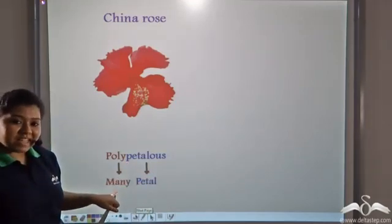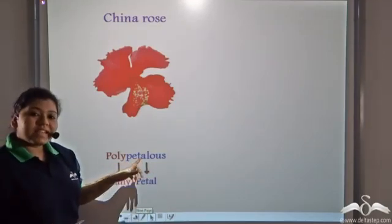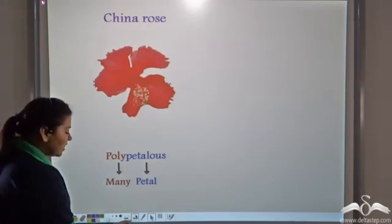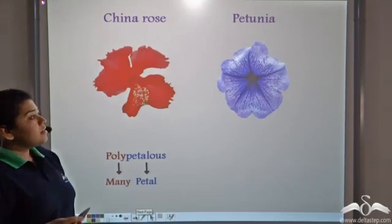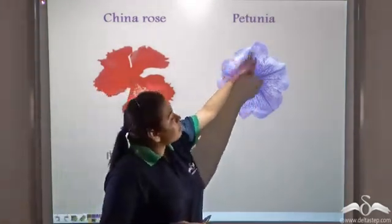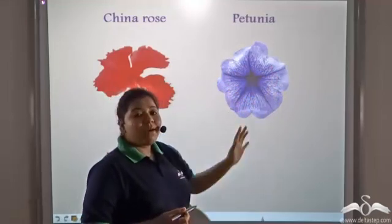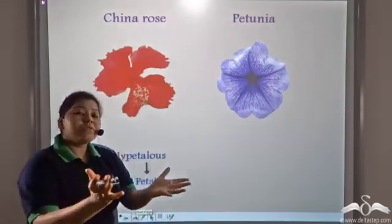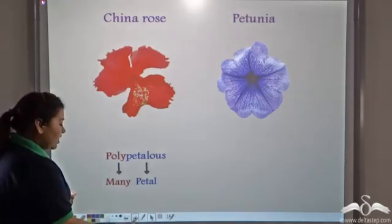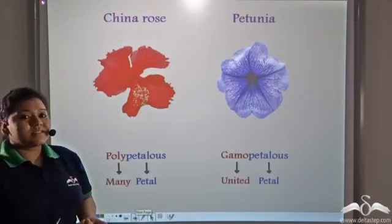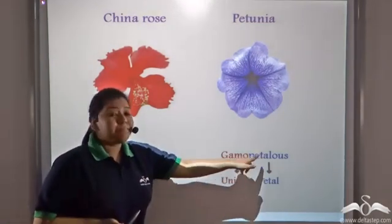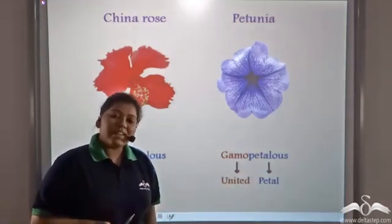Now, look at this flower. This is a petunia flower. Look at the petals. See, all the petals are fused together. So, such a flower is known as gamopetalous. Gamo means united and petalous comes from the word petals.